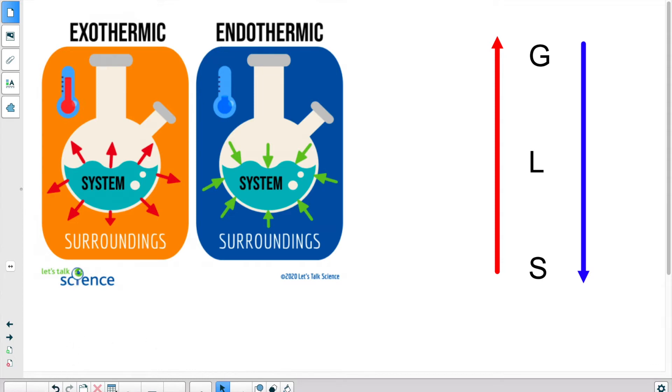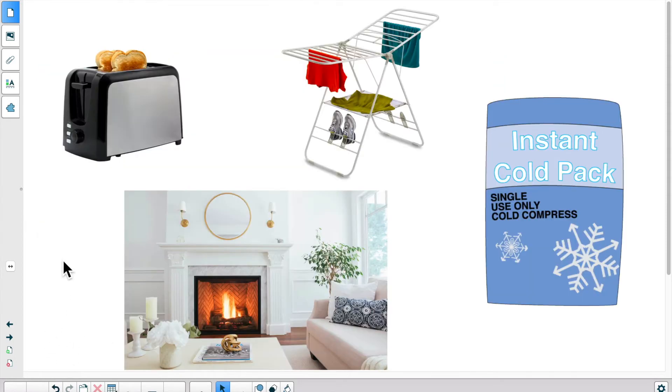Now, if we look at practical examples, we have a toaster with toasted bread. If we toast bread, what is the bread doing? Obviously, it needs to absorb energy. So, this would be endothermic because the bread absorbed energy in order to toast.